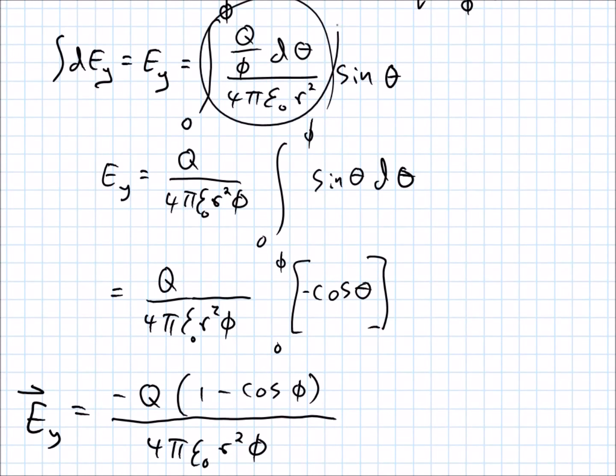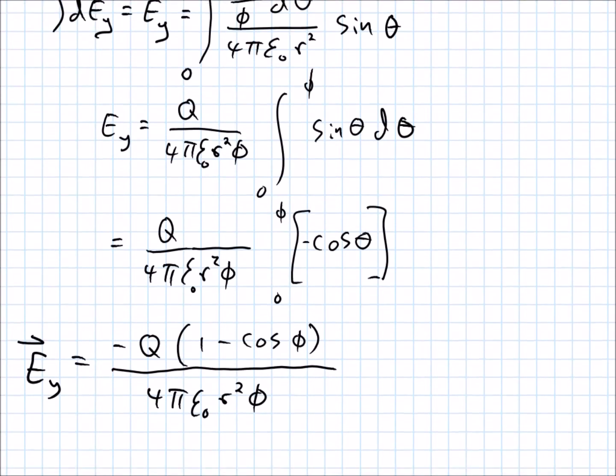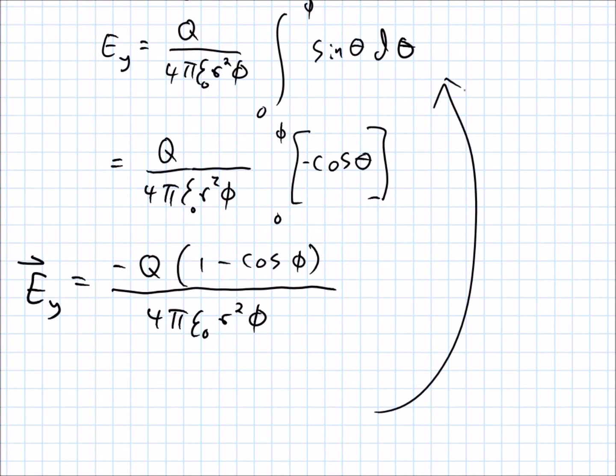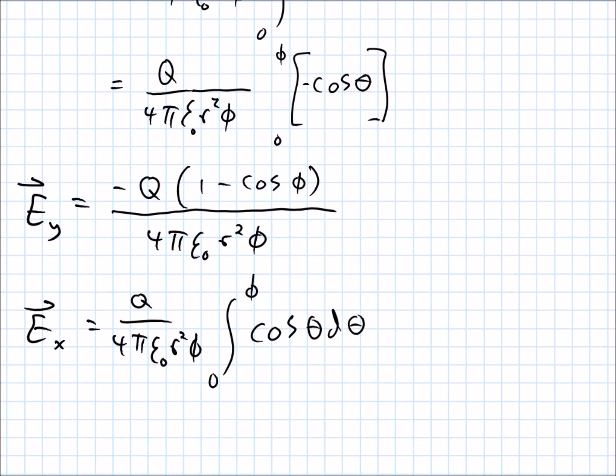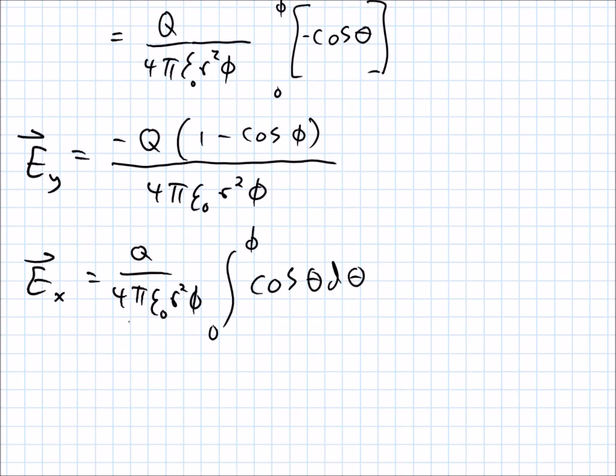So, all of this is going to be the same, right? That's our e, and the sine of theta was what we had in our y case. For x, we're just going to have a cosine of theta. And so, following that down, maybe, to that step, e x is going to equal this. The cosine of theta. Alright, integral of cosine is positive sine. Alright, sine of zero is zero minus the sine of phi.